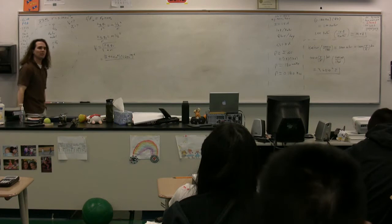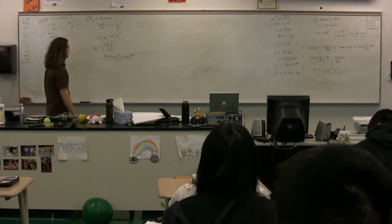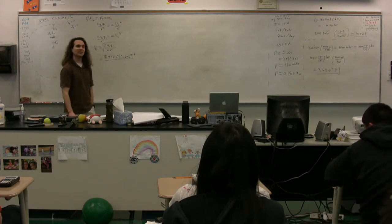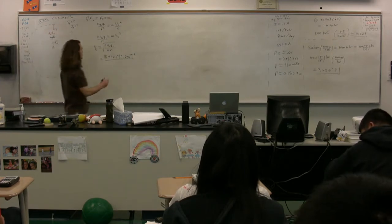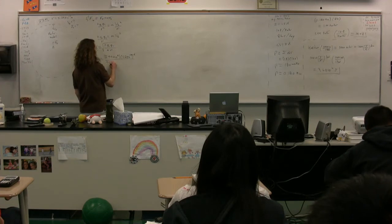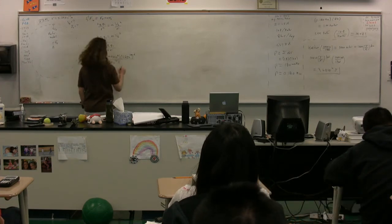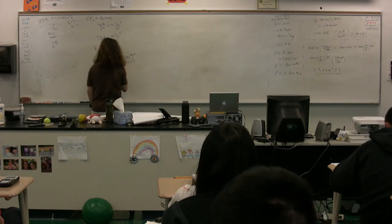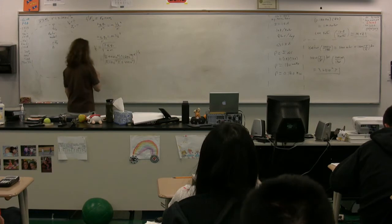The mass of what? The electron — because we're summing the forces on the electron, which is moving in a circle. So 9.11 times 10 to the negative 31st, multiplied by the radius, which they gave to be 5.29 times 10 to the negative 11th, and take the square root of the whole thing.